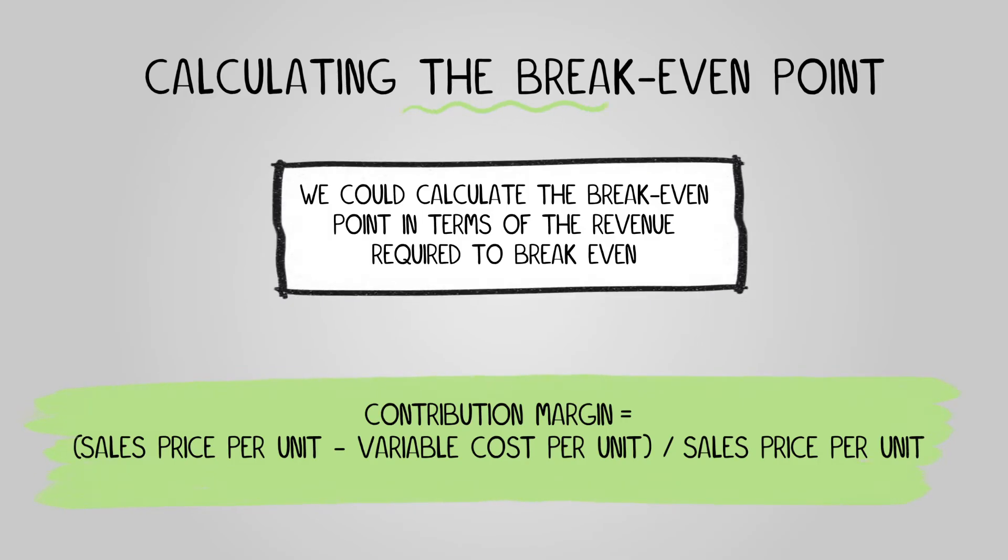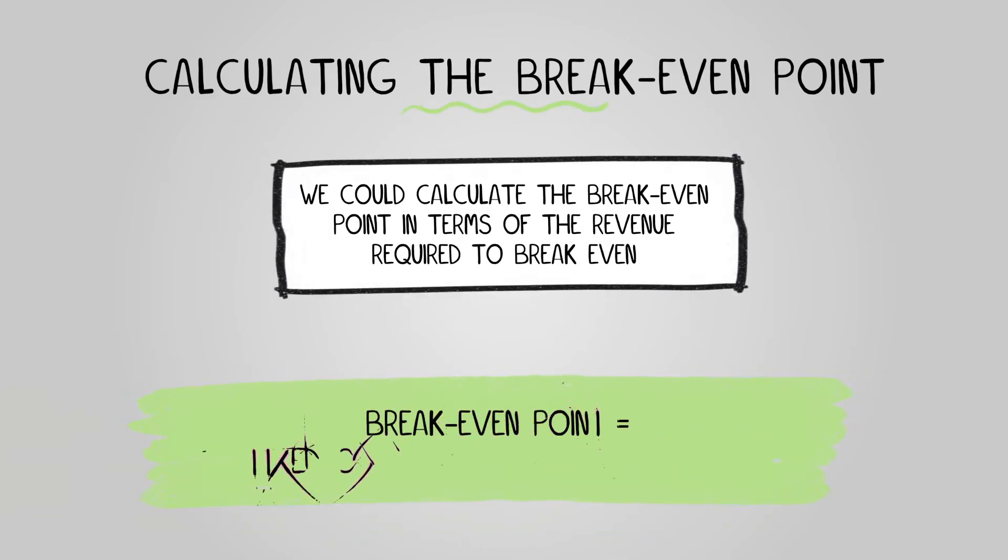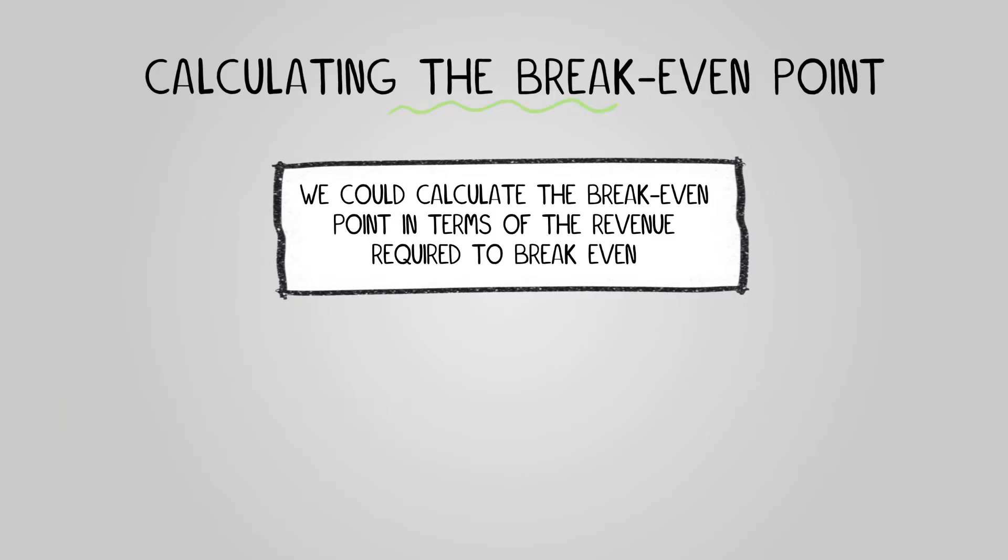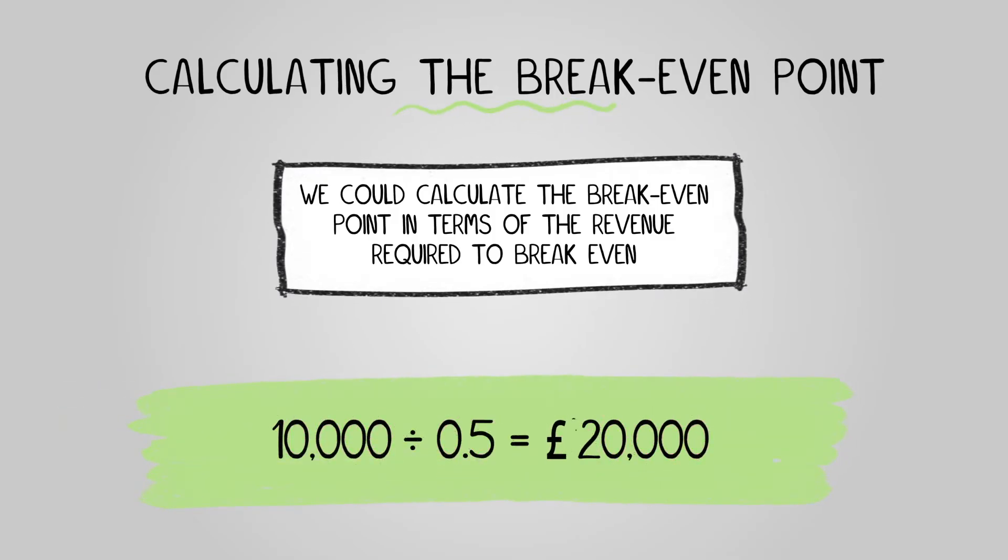We can then work out the break-even point as: break-even point equals fixed costs divided by contribution margin. So for our previous example, the break-even point in pounds would be ten thousand divided by zero point five, which equals twenty thousand pounds.